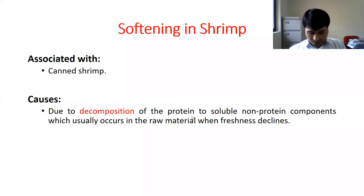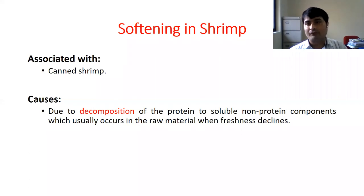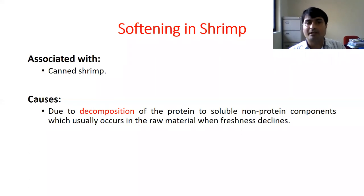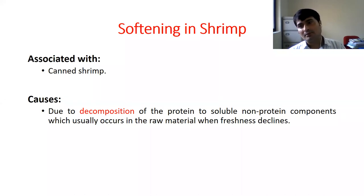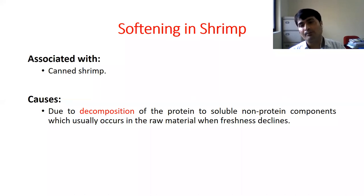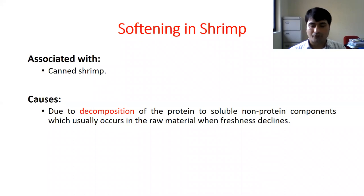We will continue. So another problem is the softening in shrimp. This is associated with canned shrimp. The cause is the decomposition of proteins to soluble non-protein components. That is the cause of softening.